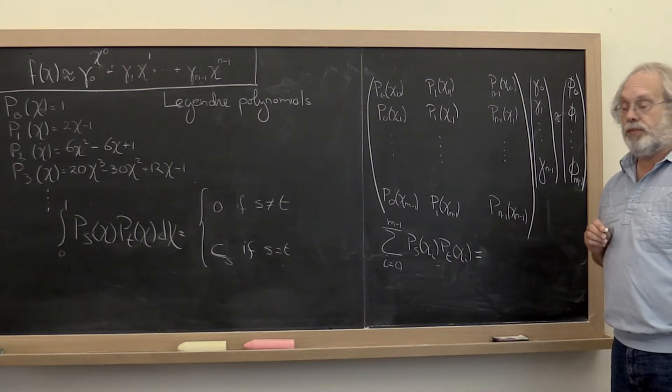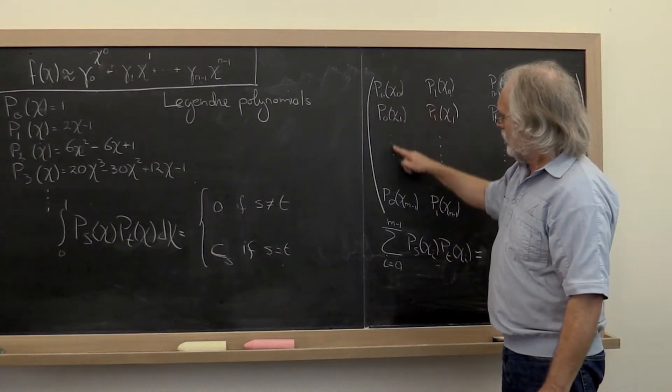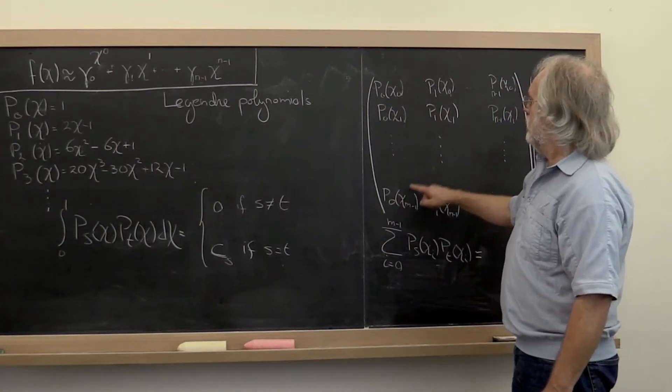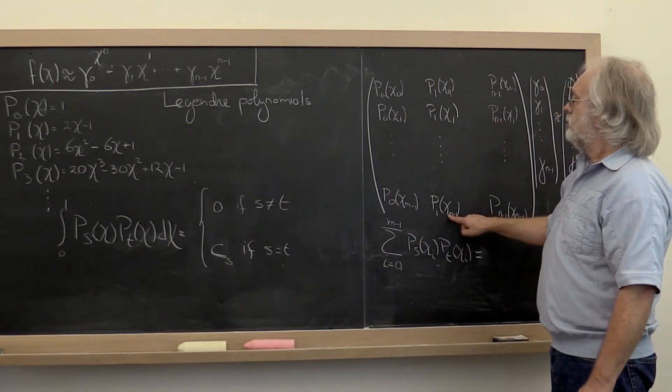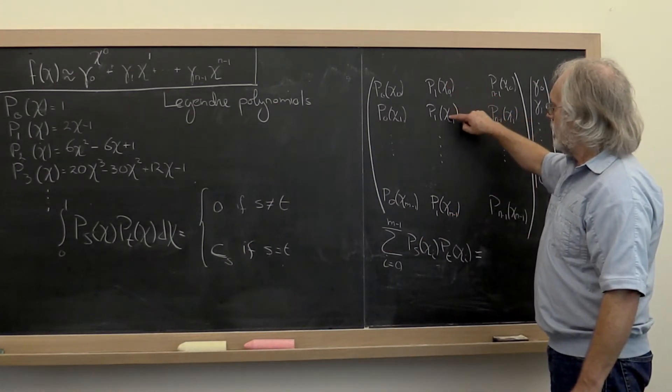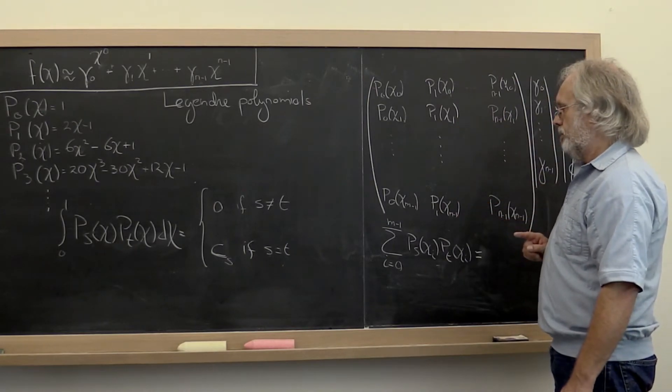Now what's going on here? This here really is a sampling of the polynomial of degree 0. This is a sampling of the polynomial of degree 1 at points chi 0, chi 1, and so forth.